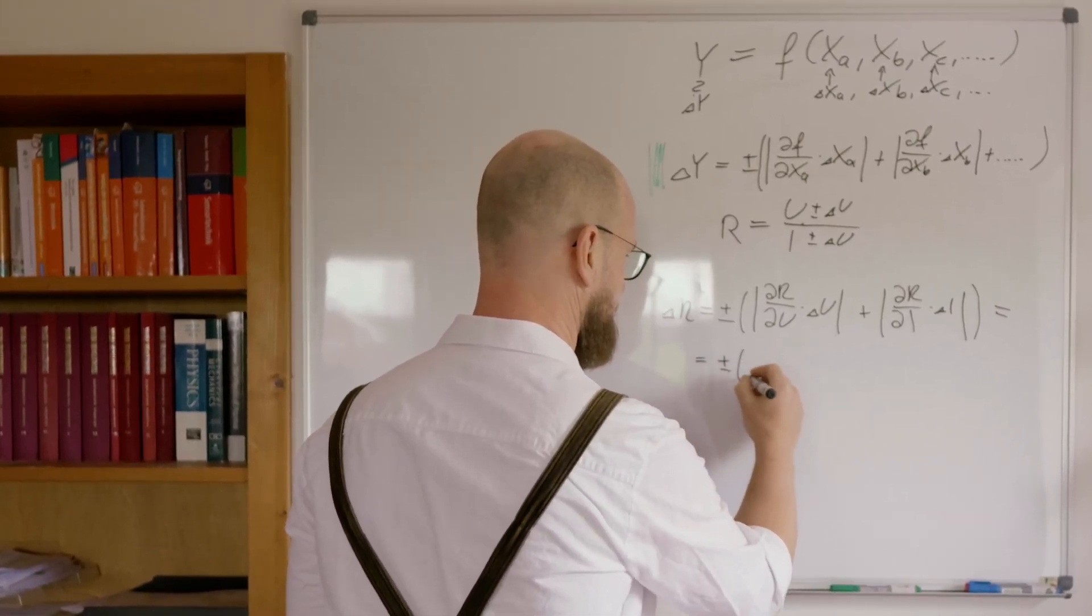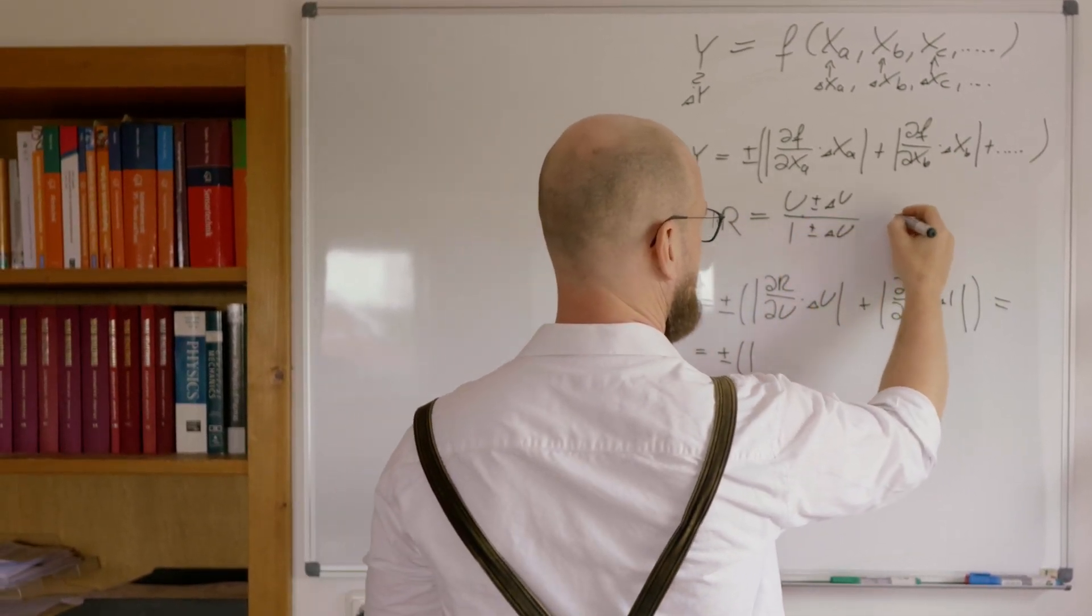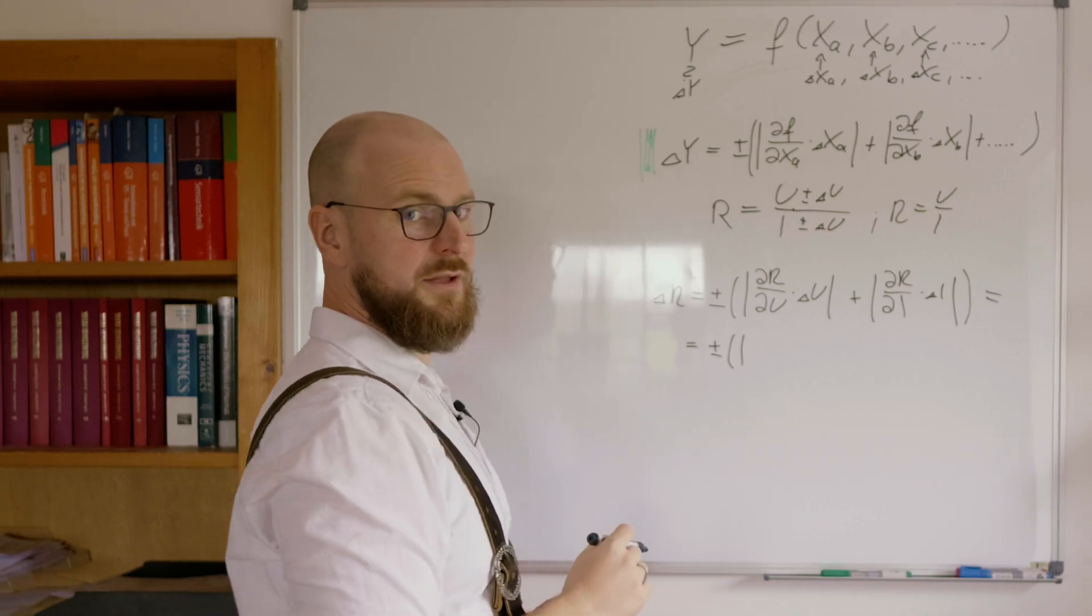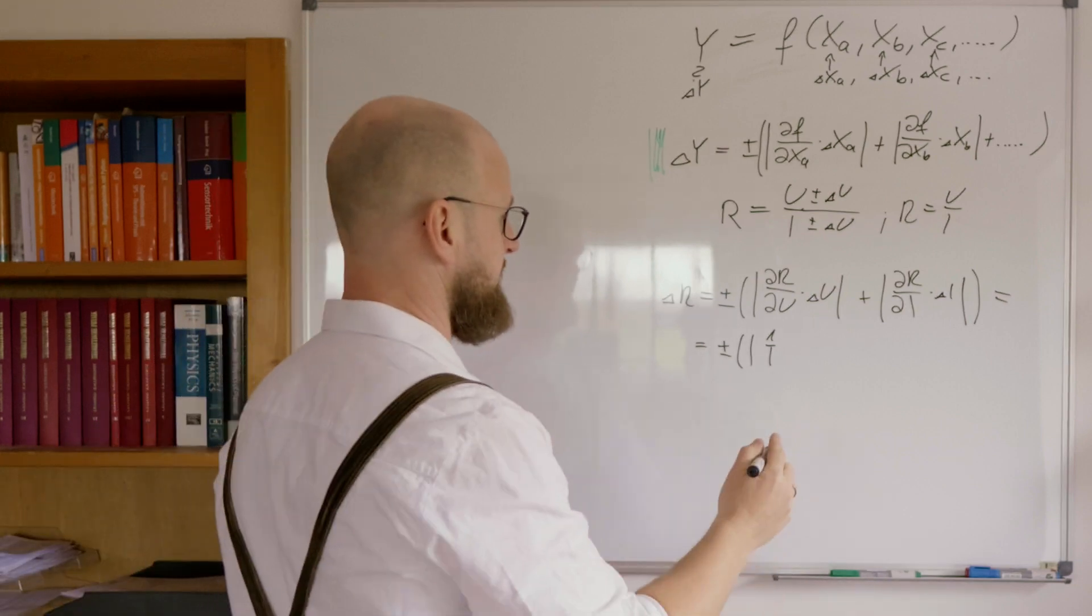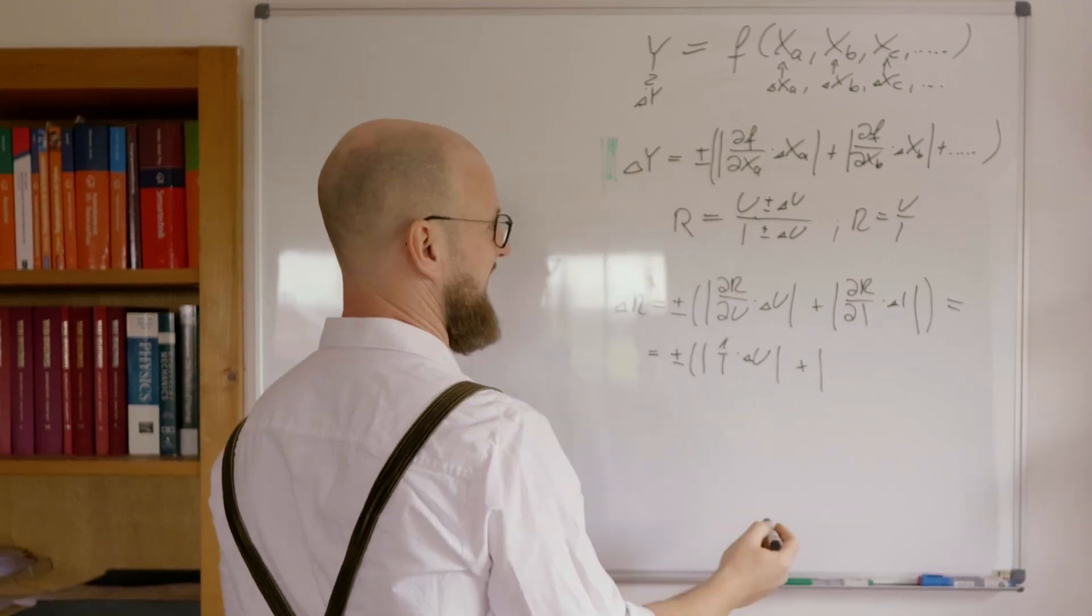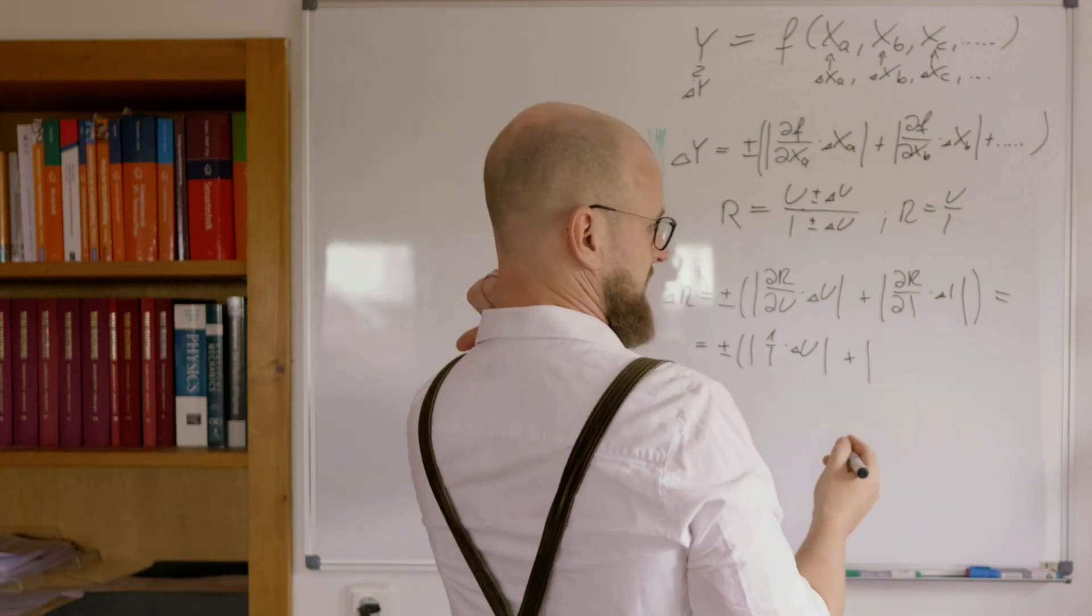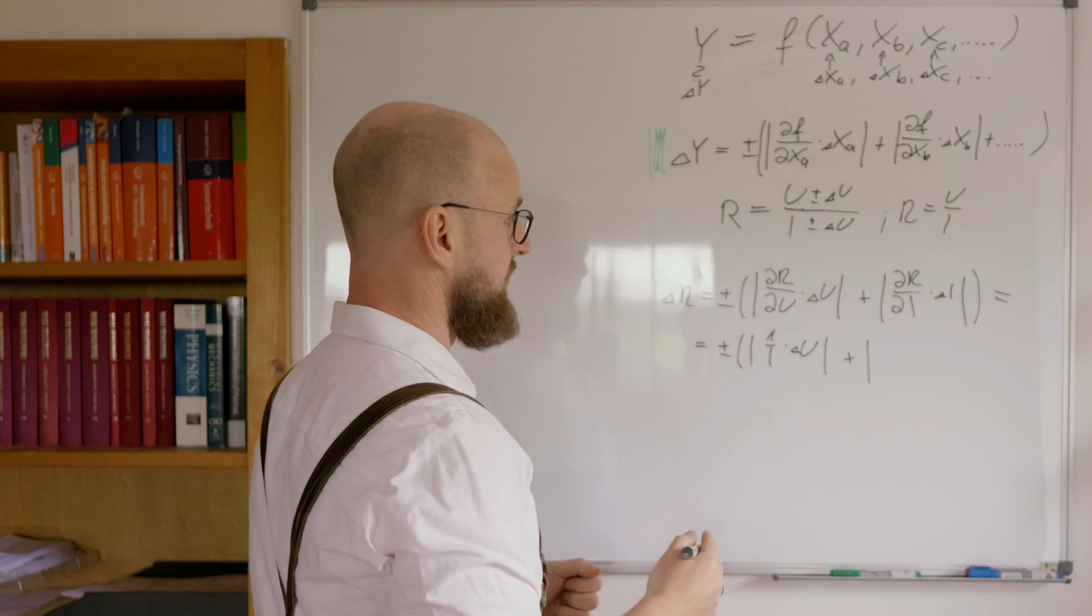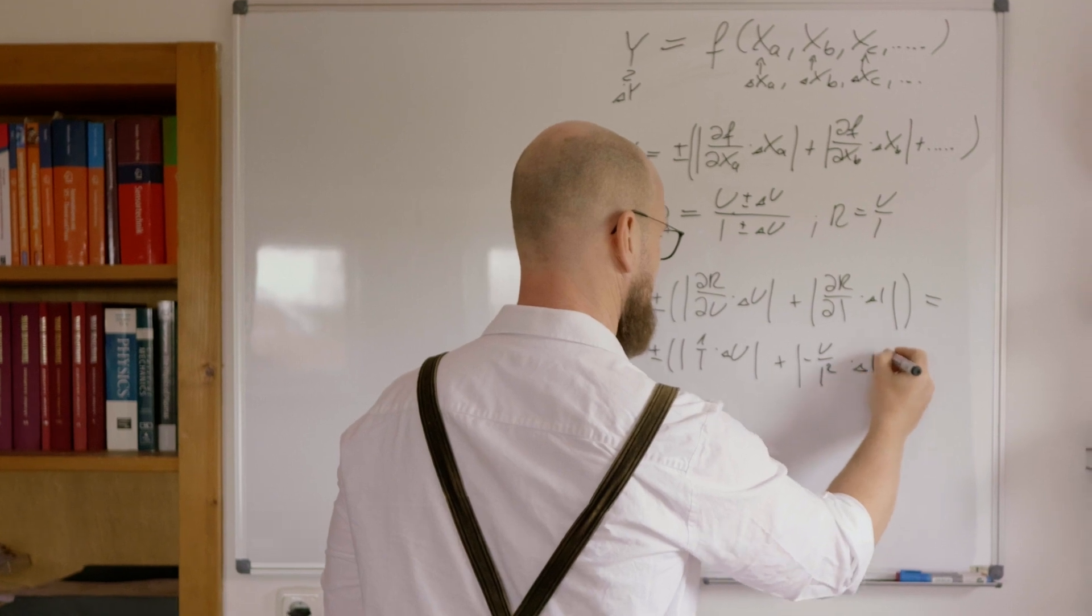we get plus minus, deriving that, just writing it down in simpler ways, deriving that equation by U, simple, it's just 1 over I, times the error in U, plus, no, on the other side, deriving that, by the current, is a little bit more, yeah. Complex is the wrong word, but it's not as nice as it's to derive to U. So, we get minus U over I squared, times the error in I.